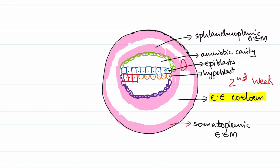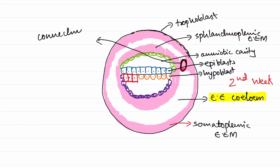At one region there is no formation of extra embryonic coelom — this is actually a connection between the embryoblast and the cytotrophoblast. The trophoblast has differentiated into the inner cytotrophoblast and syncytiotrophoblast, where the maternal spiral arteries are present. Nutrition from the trophoblast enters the embryoblast through this connection, which is called the connecting stalk. The connecting stalk is important because it later develops into the umbilical cord.